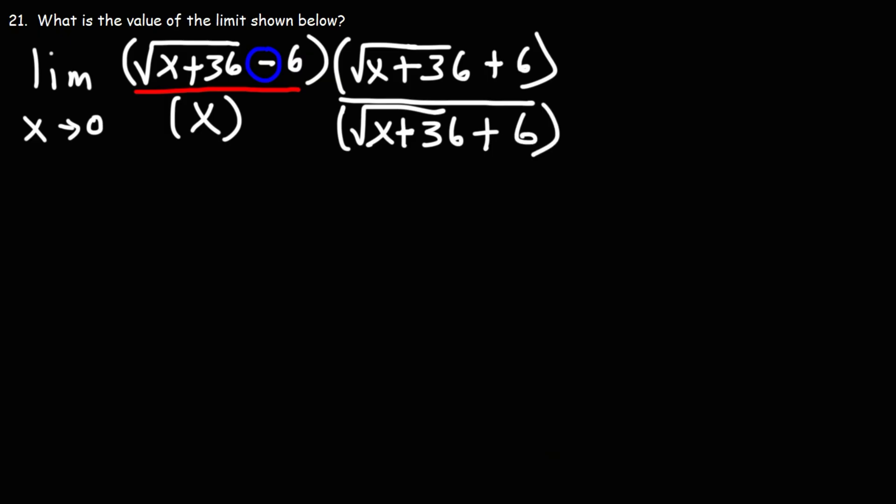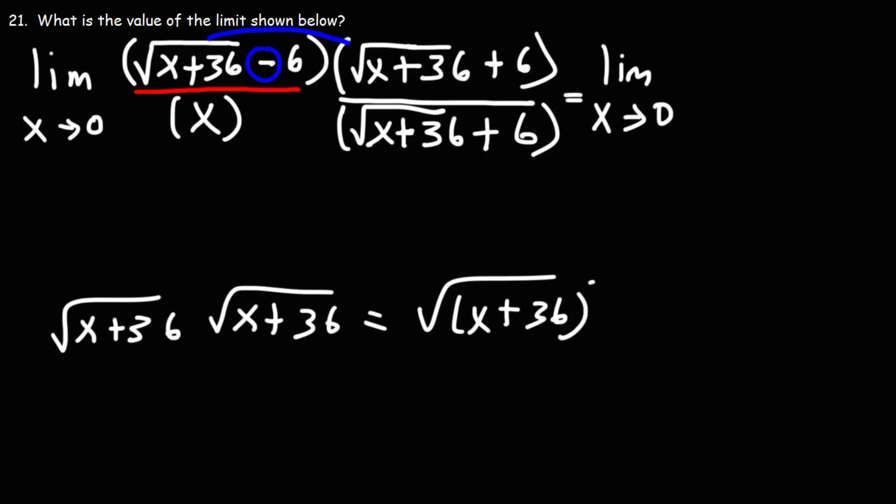So now let's FOIL. The square root of x plus 36 times itself will be x plus 36. When you multiply these two, you're going to get the square root of x plus 36 squared. Now, square roots have an invisible index of a 2. So this is x plus 36 over 2 divided by this 2, which is 1. So that just simplifies to x plus 36.